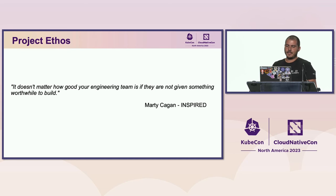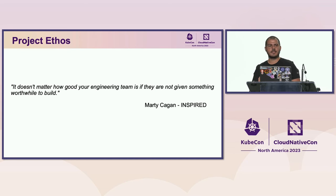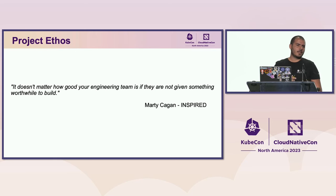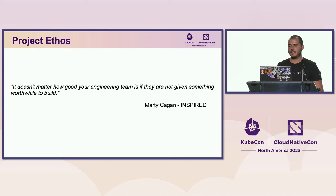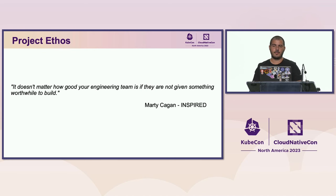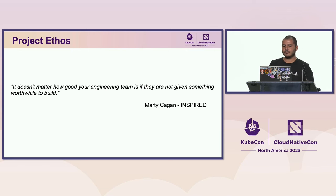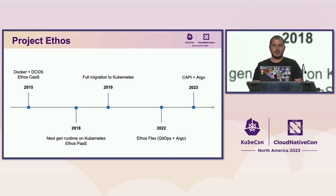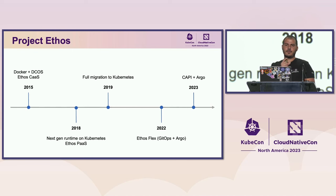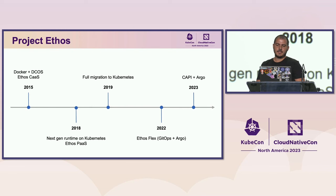At Adobe, our Kubernetes platform called Ethos is used by amazing internal engineering teams which are working on Adobe products such as Adobe Photoshop, Adobe Analytics, Adobe Firefly, Adobe Experience Manager, Adobe Sign, and so on. Project Ethos is a cross-cloud multi-tenant Kubernetes-based platform built through the collaboration between the Adobe infrastructure teams and product development teams.